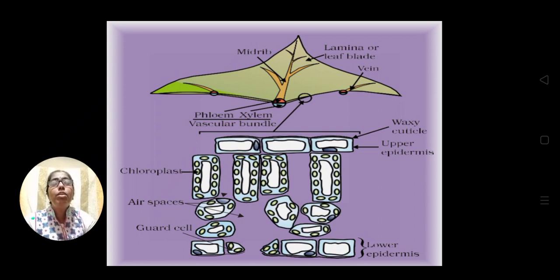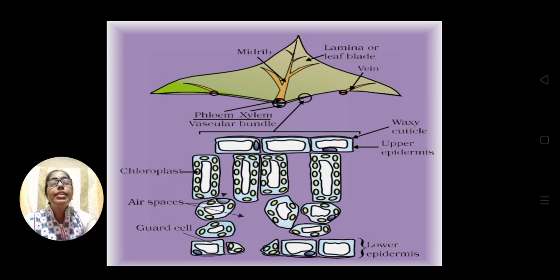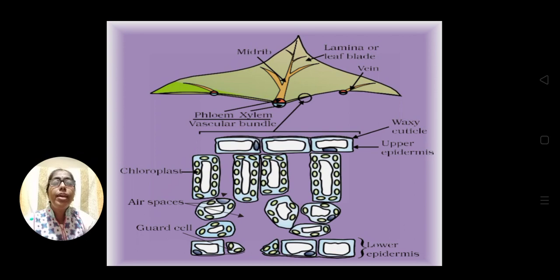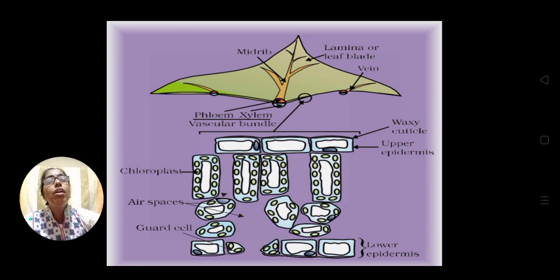Below the epidermal cells are elongated, pillar-like vertical cells — these are known as mesophyll cells. Below them are other differently shaped mesophyll cells. You can see that these mesophyll cells contain small round, spherical, green structures — those are the chloroplasts. In the lower epidermis there is the stomatal opening. This is the cross-section of a leaf where the mesophyll cells are present, and photosynthesis takes place in the chloroplasts.